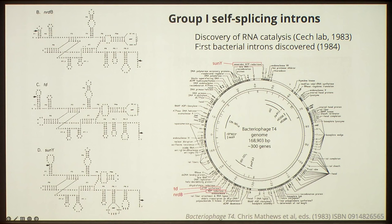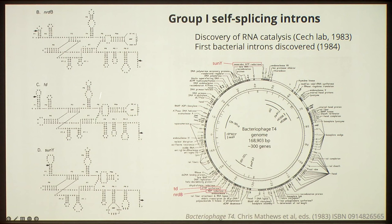I became interested in Group 1 self-splicing introns many years ago. These are RNA catalysts. They were discovered more or less contemporaneously with the discovery of RNA catalysis by Tom Cech, Norm Pei, Sid Altman, and others. They were the first introns to be found in bacteria. We were told that RNA splicing is a eukaryotic feature, but then these introns were found in bacteria. They're not spliceosomal introns — they have complicated 2D and 3D structures.